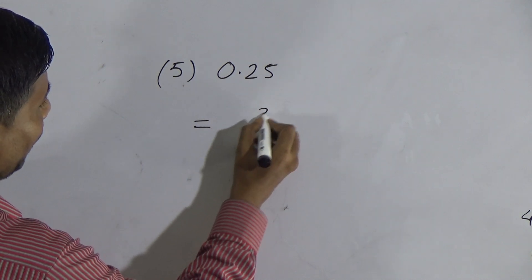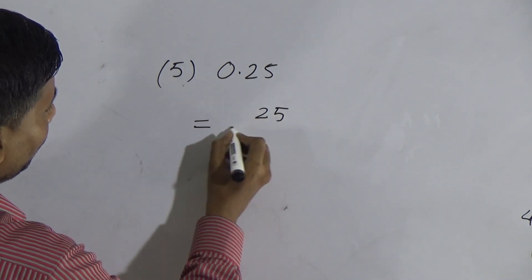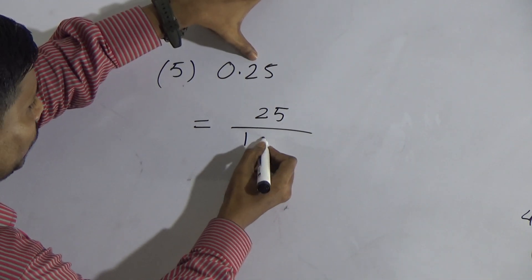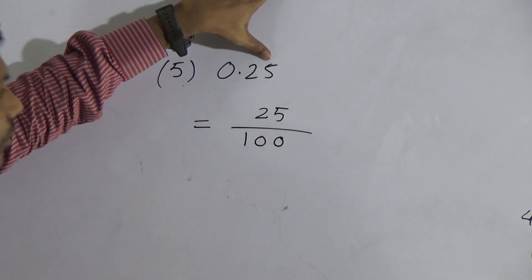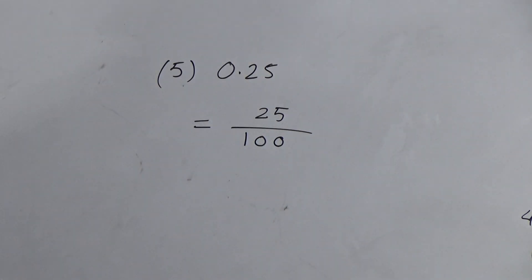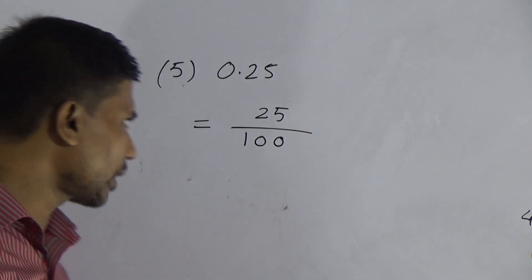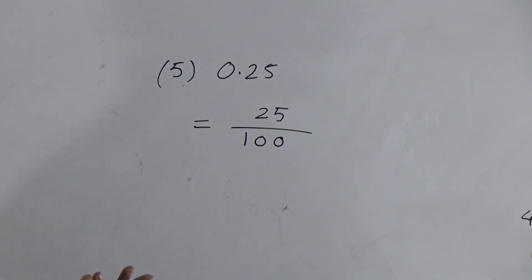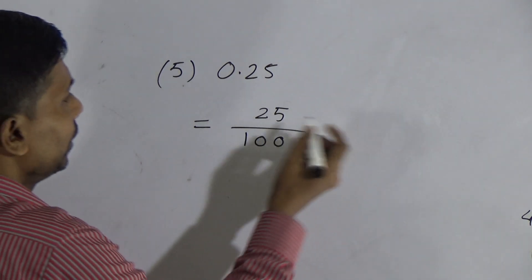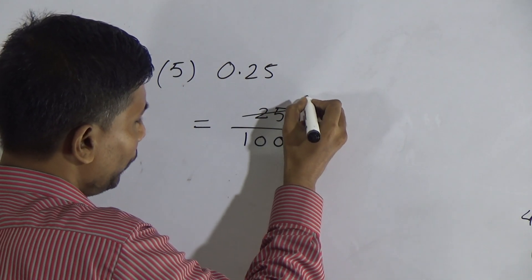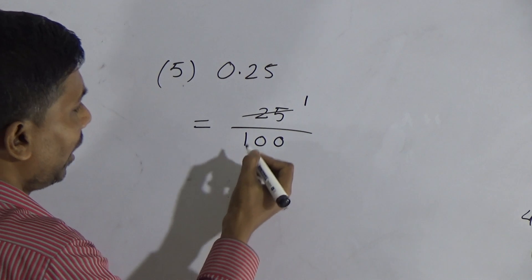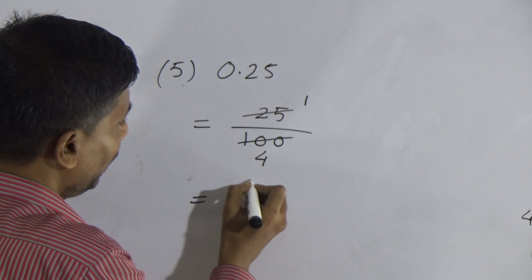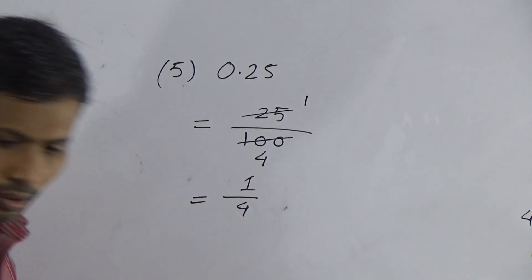Now look at 0.25. Write 25, then for the decimal point write 1, and for each digit after the point write one zero — since there are 2 digits, write 100. So we have 25 by 100. We can reduce by dividing by 25: 25 divided by 25 equals 1, and 100 divided by 25 equals 4. The result is 1 by 4.